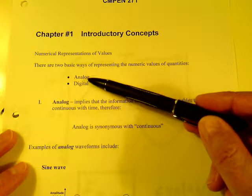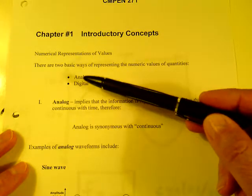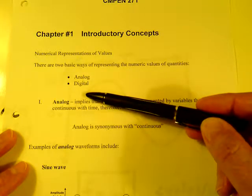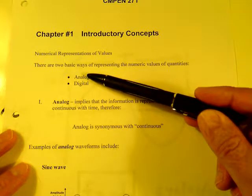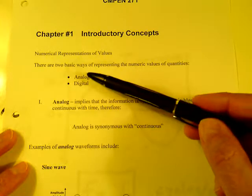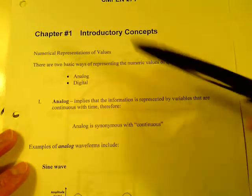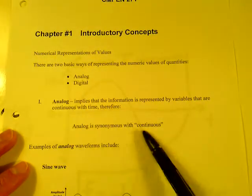If you're an electrical engineer, you're probably going to have a choice to either go into analog electrical engineering or digital electrical engineering or power electrical engineering. But right now, we're going to look at the differences between analog and digital quantities. Analog implies that the information is represented by variables that are continuous with time. Therefore, analog is synonymous with continuous.